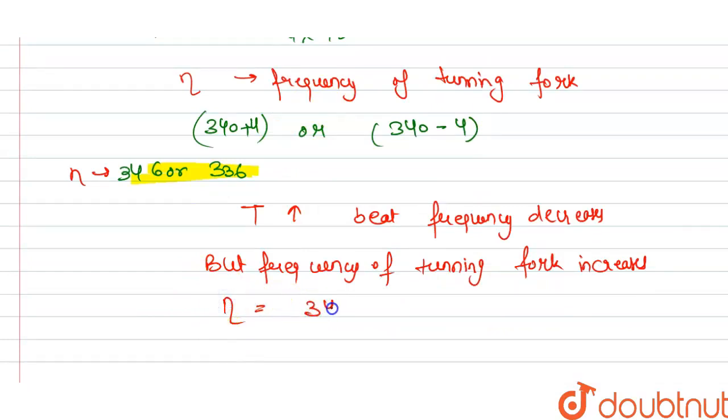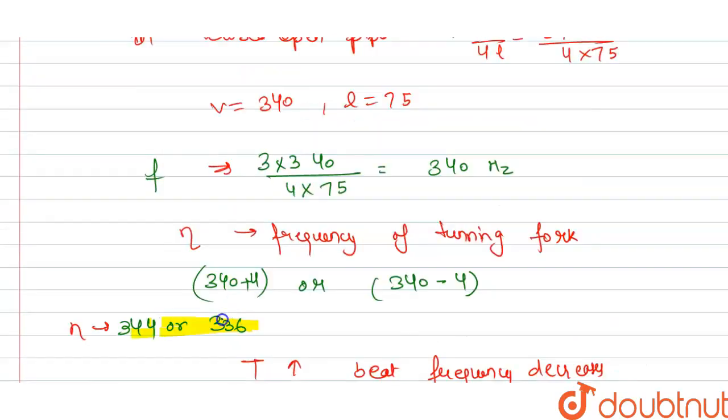346 hertz. If we add 340 with 6, we get 346. So this is 346 hertz. The frequency of the tuning fork is this. Now we check which option is correct.